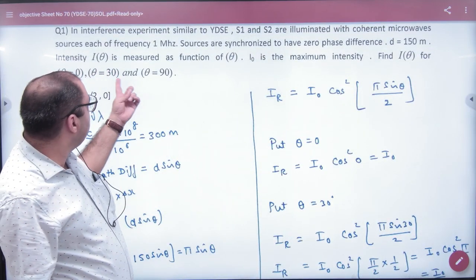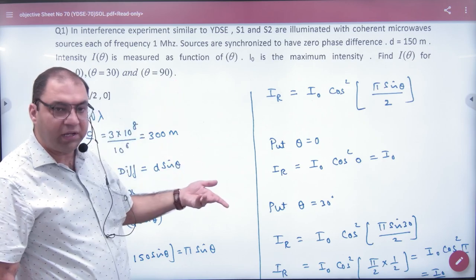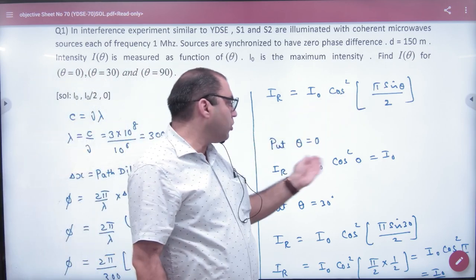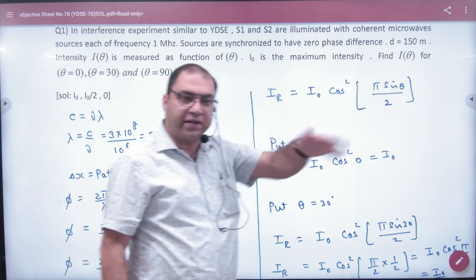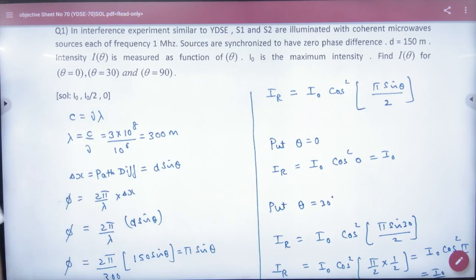Now he is saying that theta 0, 30 and 90 intensity, the resultant. Theta 0 put, answer. 30 put, 90 put, resultant intensity values. So clear here? Okay.